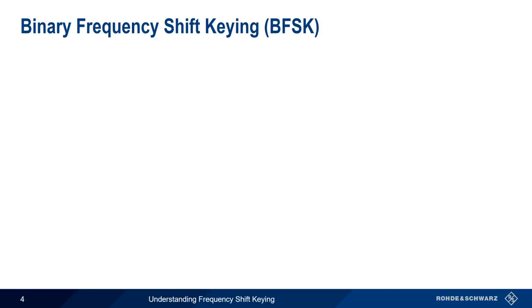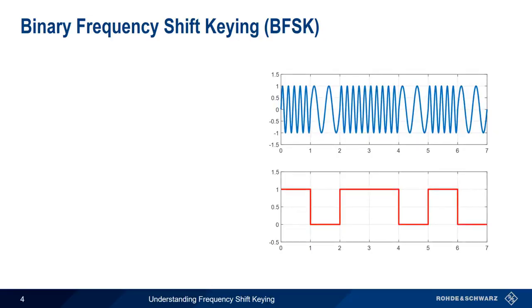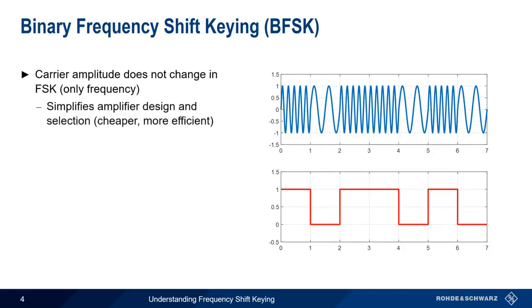Looking at a time domain representation of FSK, we can clearly see that the amplitude of the carrier does not change. This is a significant advantage in that it simplifies amplifier design and selection. We can still recover the information even if a non-linear amplifier causes amplitude fluctuations in the transmitted or received signal.